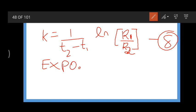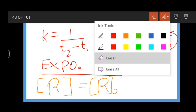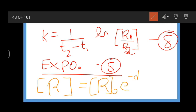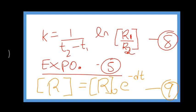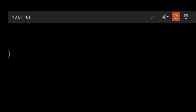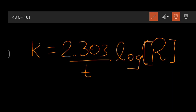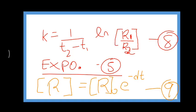Equation 5 can also be written in exponential form as: R = R₀ e^(-kt). This is equation 9. Combining equations 7, 8, and 9, our final first order reaction rate constant formula is: k = 2.303/t × log(R₀/R).